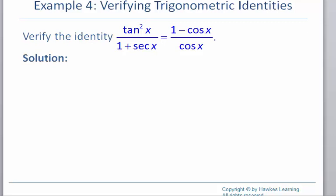Our directions tell us to start with the more complicated side, but it's not really clear in this case which side is more complicated. So we're just going to randomly select a side and try to start working on the problem. I'm going to begin with the right-hand side of the expression. My guidelines tell me to write everything in terms of sines and cosines, which is already done.